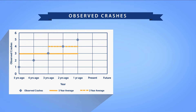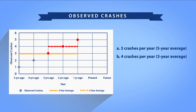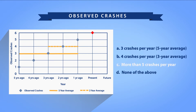The observed crash frequency approach assumes the historical observed crashes represent the expected future safety performance in the absence of any changes to the site. As such, it may not be reliable when the site characteristics change drastically from the past condition to the present or future condition of interest. If you were given an exam with the data shown in this chart and asked to estimate the crash frequency for the present or future year, what value would you select? A, three crashes per year, five-year average; B, four crashes per year, three-year average; C, more than five crashes per year; D, none of the above. The answer is likely C, more than five crashes per year, because there is a clear increasing trend in observed crashes. This underlying trend could be due to several factors, but the average observed crash frequency does not capture this trend.